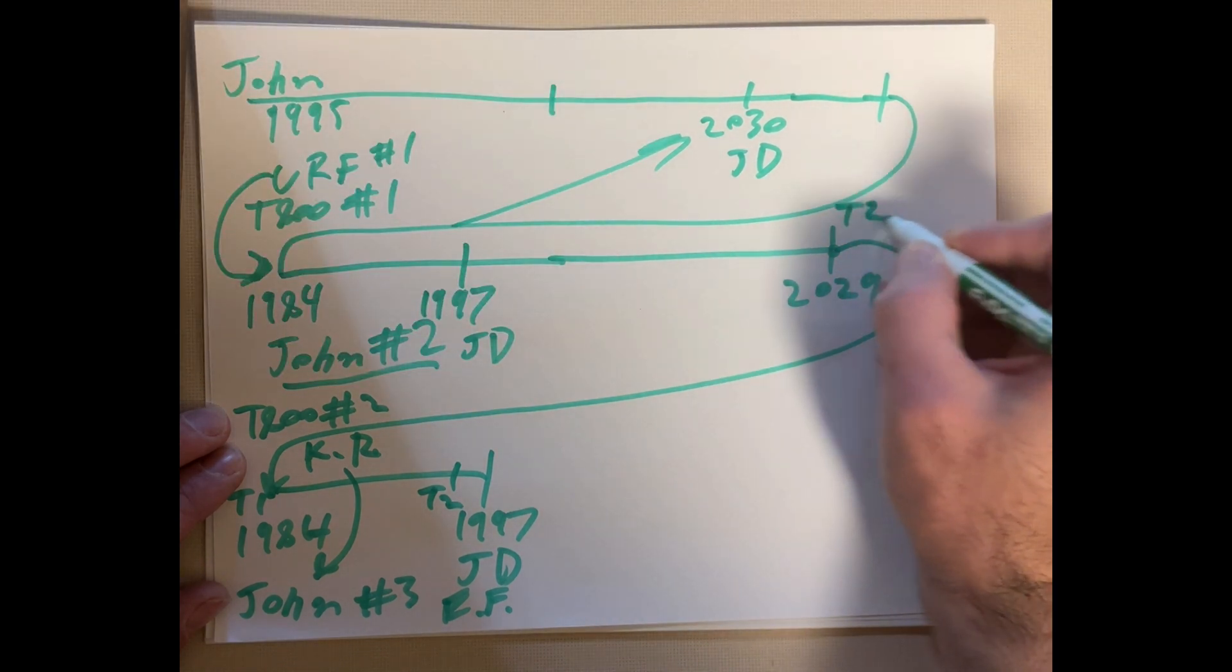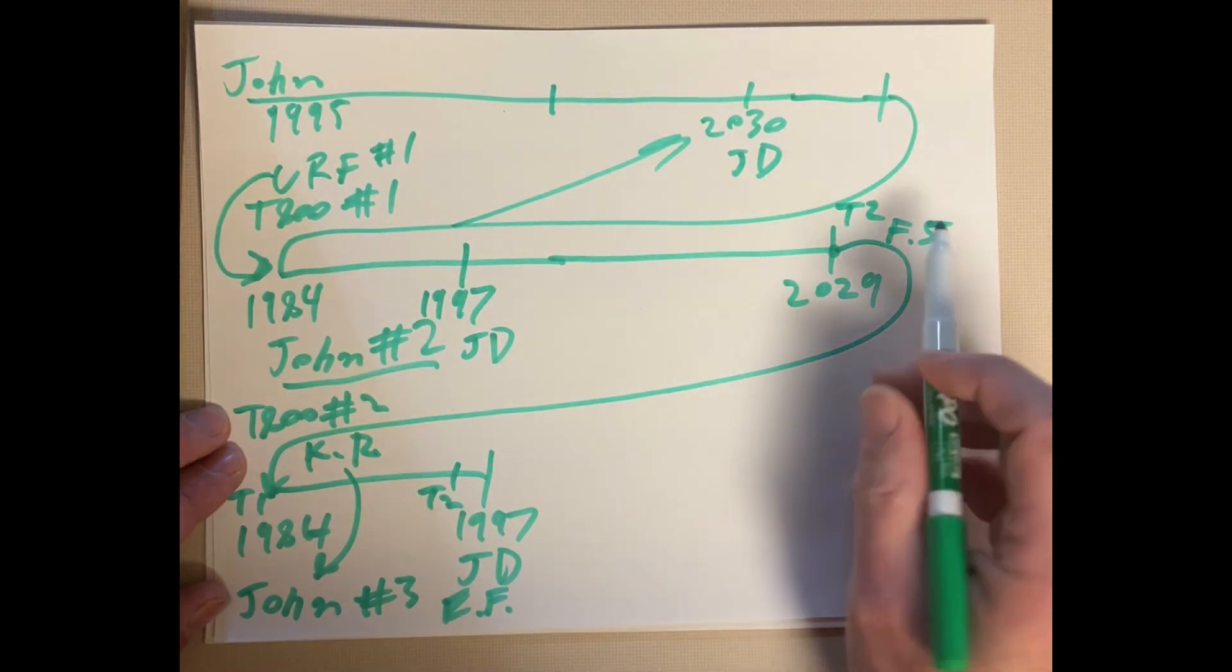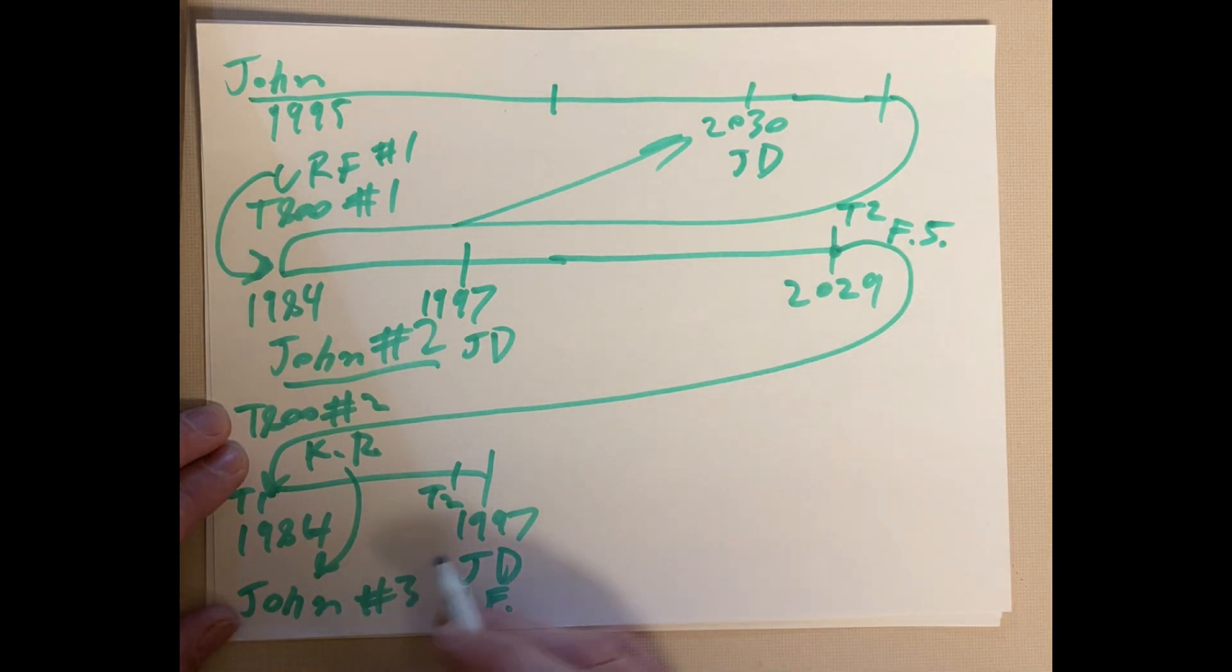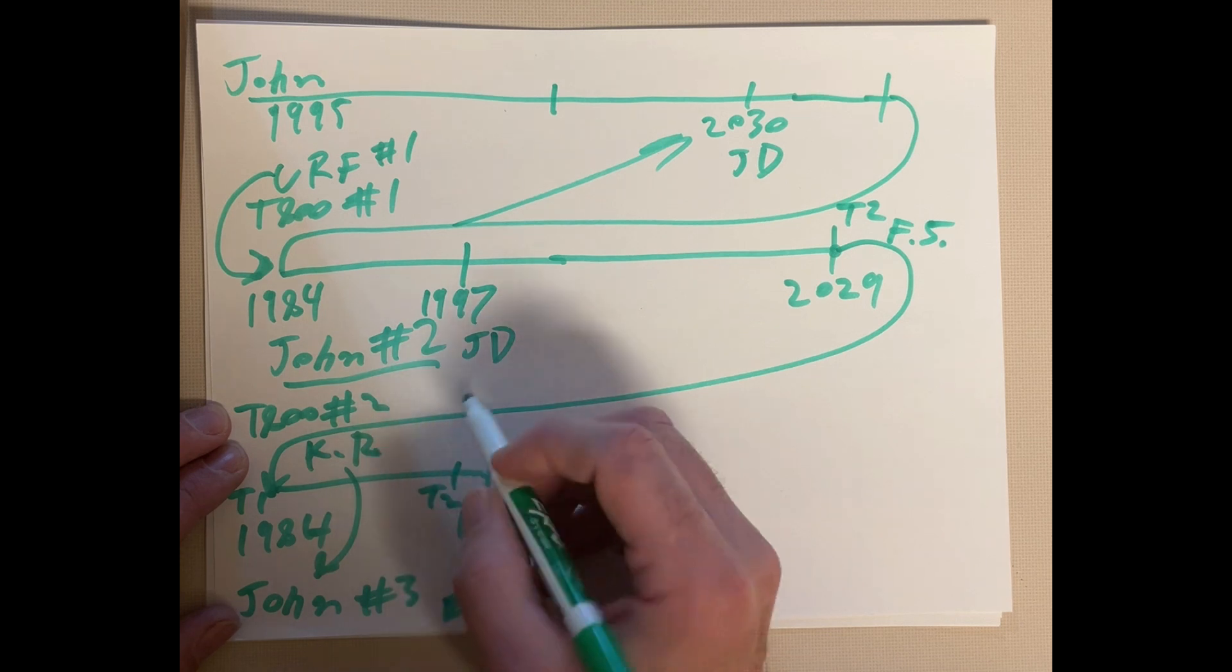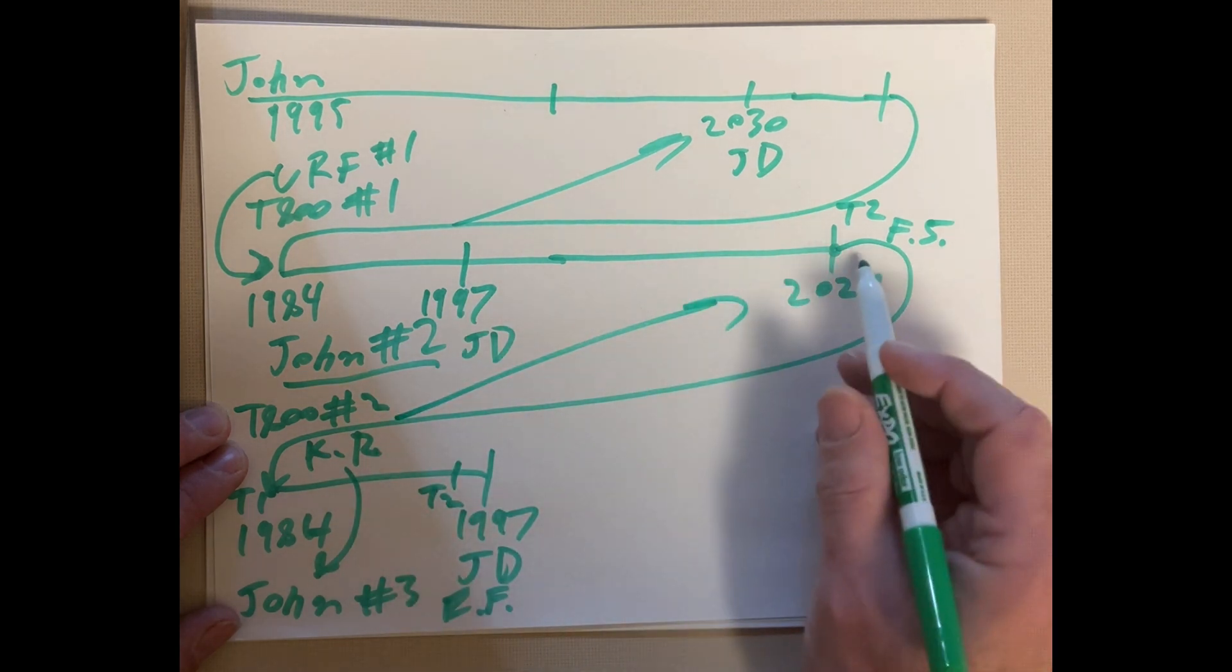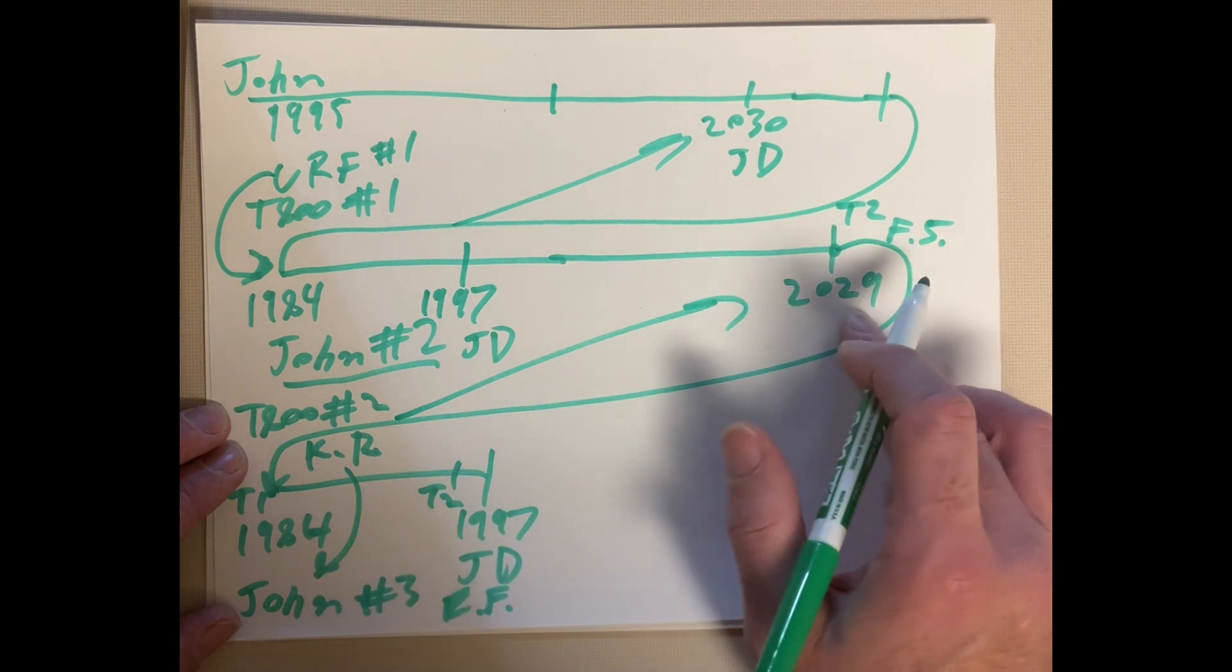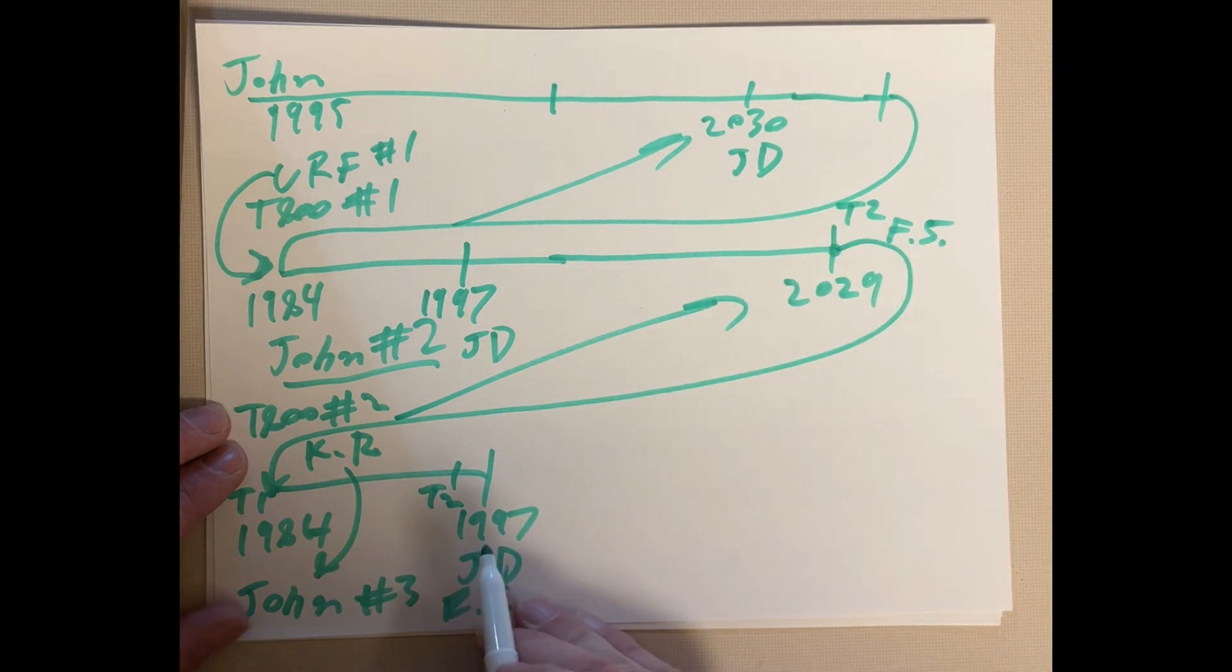So, the T-2 future scene is from this timeline. So, now that we have John number three, the information Sarah gets from Kyle Reese is substantially more accurate because it comes from this same 1997 Judgment Day timeline.